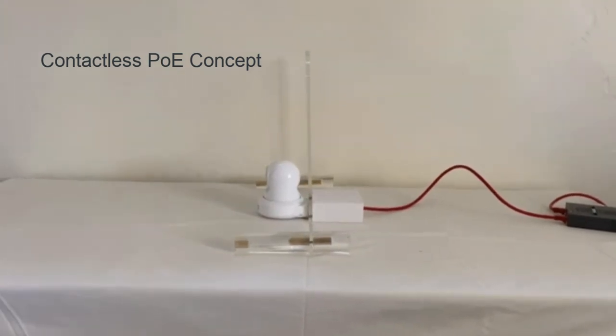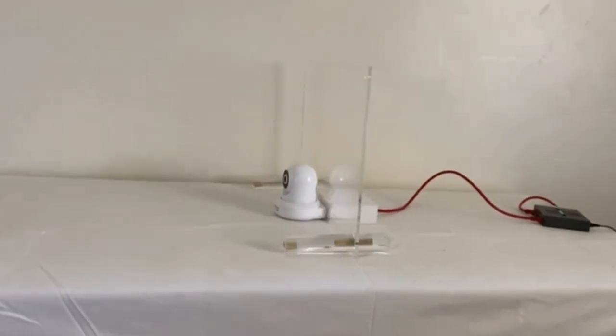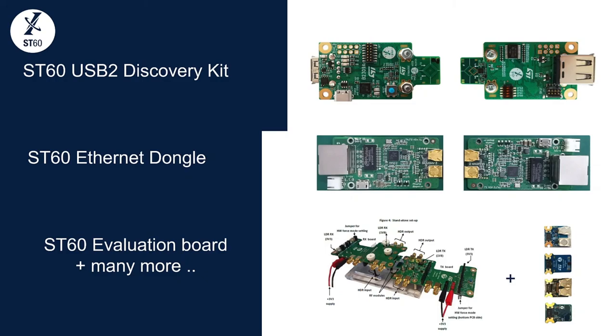Thank you for watching. You just saw how to use ST60 in combination with a standard wireless charging solution to create a truly contactless link. USB 2 discovery kit and Ethernet dongles are a great way to build prototypes with ST60. You can also run a full evaluation of the technology with a fully equipped eval board. To get started with ST60, please reach out to your local ST sales contact.